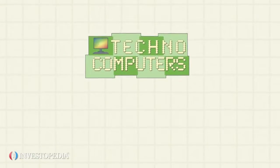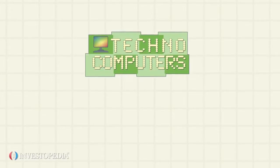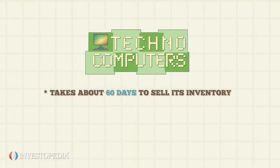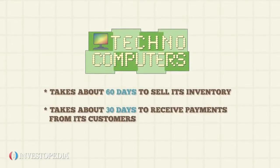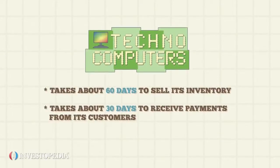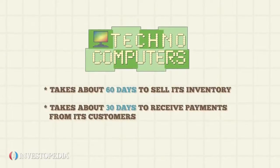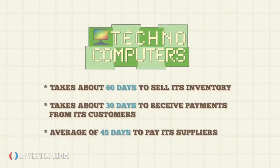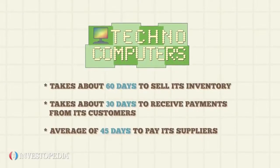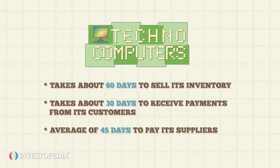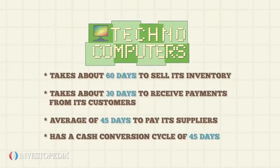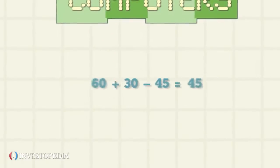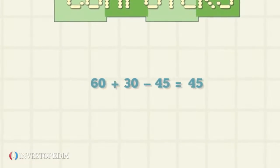Techno Computers, a high-tech computer manufacturer, takes about 60 days to sell its inventory. It takes about 30 days to receive payments from its customers for the product sold, and it takes an average of 45 days to pay its suppliers. This means that Techno Computers has a cash conversion cycle of 45 days: 60 plus 30 minus 45.